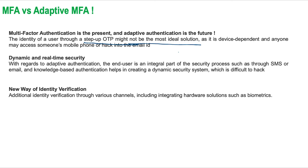It is based on a matrix of variables that provides a risk profile of a user. Based on this risk profile, the system generates additional authentication processes before the user is allowed access. While normal MFA could be part of the adaptive authentication process, adaptive authentication is much more intuitive and real-time, with factors such as knowledge-based questions, geo-locations, and identity assurance making the system more robust.